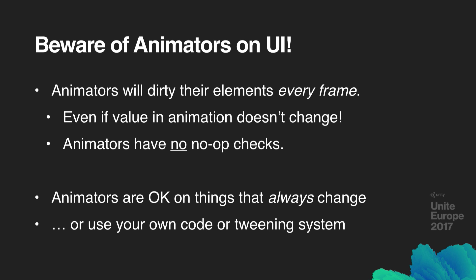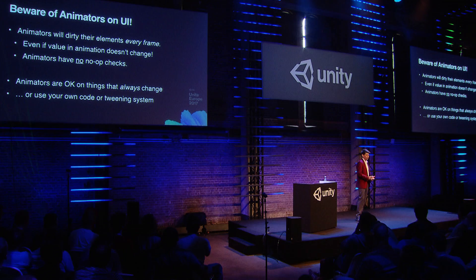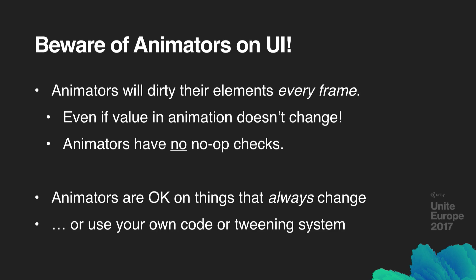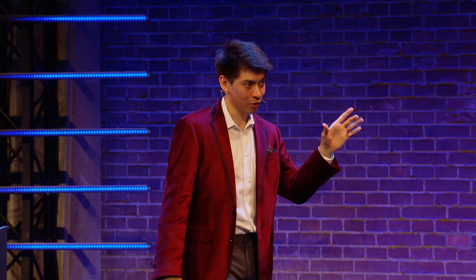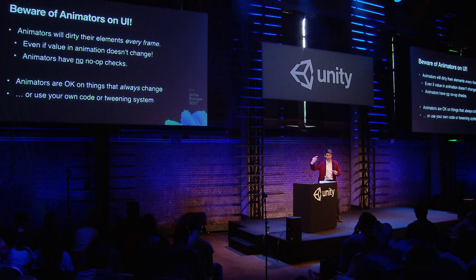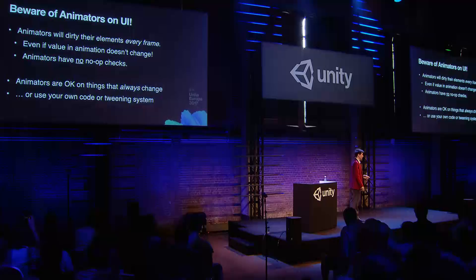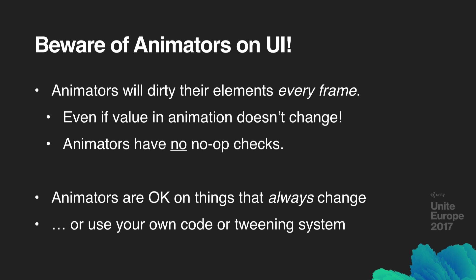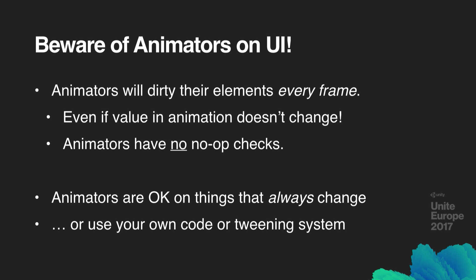So if you have any animation at all in an active state you're animating or blending to or from, the animator will write those properties no matter whether they've changed or not, firing the OnDidApplyAnimationProperties callback and dirtying your layout — even if nothing has apparently changed in your UI. If you do have things that are always changing, like a little bouncing widget, that's okay — it's going to be changing every frame anyway. But if you have things that change rarely or only change in response to events for a short period of time, write your own code. Use a coroutine, write your own tweening system — it will be a lot more efficient than Unity's built-in animator. And that's all I have to say about that.